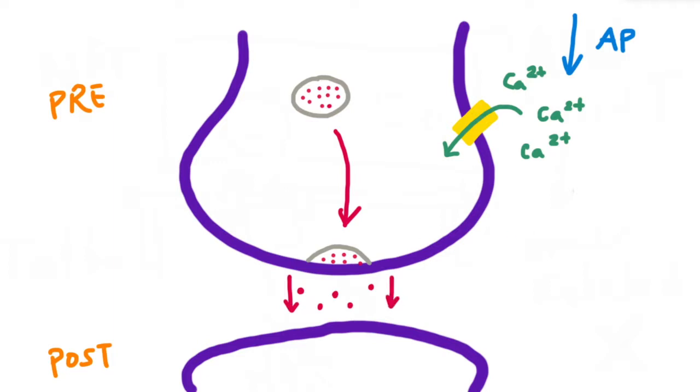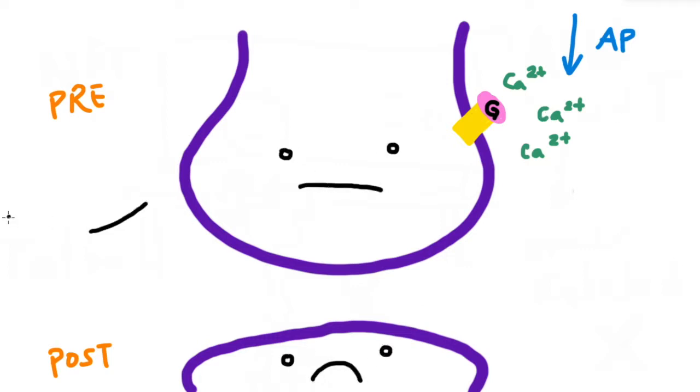These neurotransmitters interact with receptors on the postsynaptic cell, allowing the signal to propagate. Gabapentin binds to a subunit on the calcium channels, preventing calcium from entering the cell. When this action is inhibited, vesicles are unable to bind to the membrane, preventing propagation of the signal. Sorry, dude.